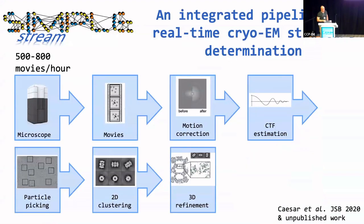So this is SIMPLE Stream — basically an integrated pipeline for real-time cryo-EM structure determination. We have the microscope producing 500 to 800 movies per hour — that's our Falcon 2. If we cut the exposure, we have a little over 1,000 movies an hour. The K2 detector can also be used to produce around 1,000 movies. We then transfer the data off the scope as part of the streaming pipeline. The motion correction in SIMPLE is very similar to MotionCor2, with a twist in how we regularize the shift trajectory so that you can split the motion correction into a large number of patches without ruining the solution.